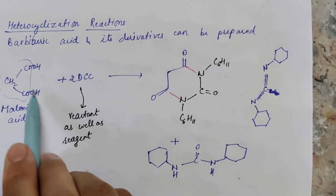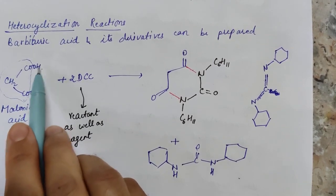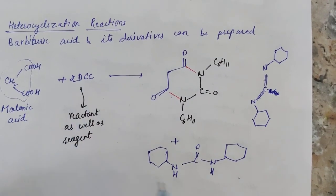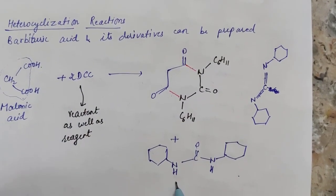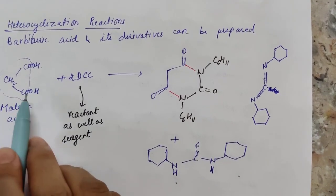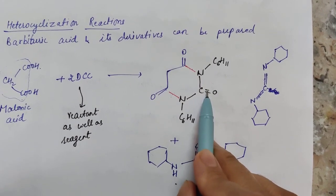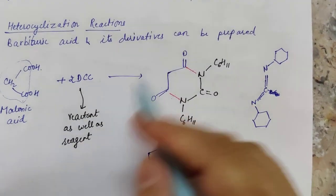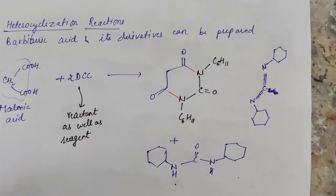Two hydrogens and one oxygen are taken up by DCC to form dicyclohexylurea, and one oxygen is taken up by the central carbon to complete its valency. This is how barbituric acid is formed.